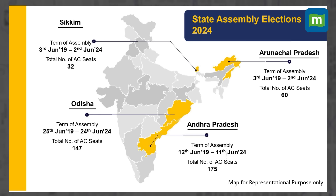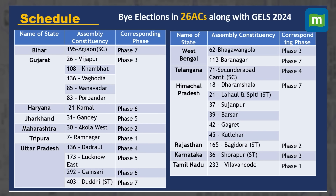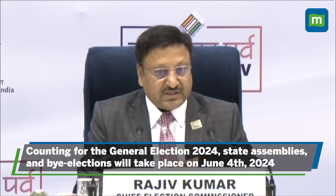Apart from the general elections, state assembly elections will be held in Sikkim, Andhra Pradesh, Arunachal Pradesh and Odisha throughout the entire month of June. Additionally, by-elections in 26 assembly constituencies across the country will be held along with the general elections 2024. The date of counting for the general and assembly elections will be 4th June 2024.